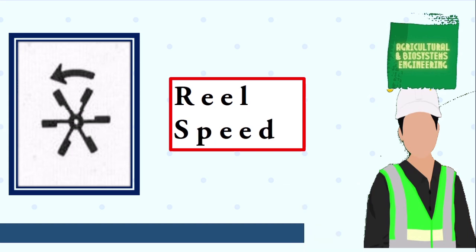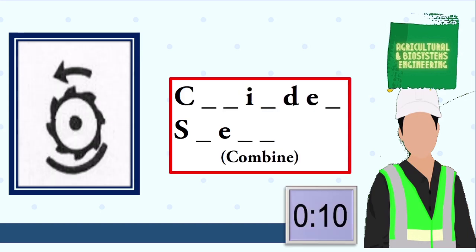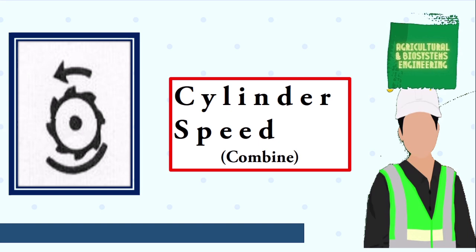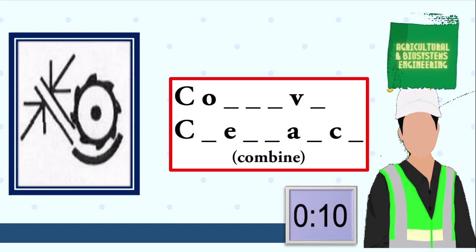The answer is reel speed. Next symbol, your 10 seconds starts now. The answer is cylinder speed. Next symbol, your 10 seconds starts now.